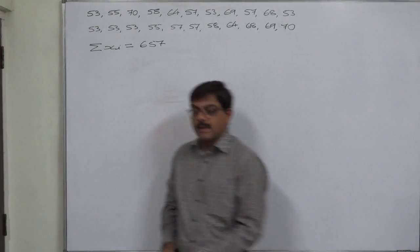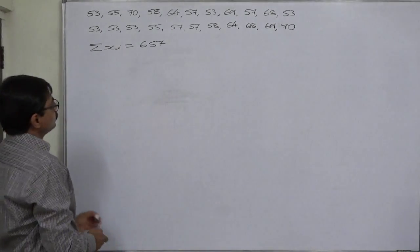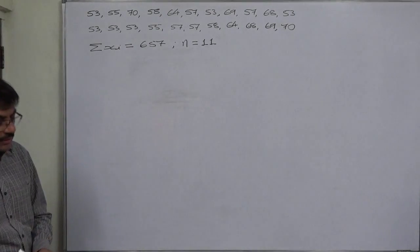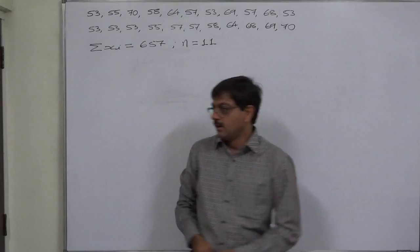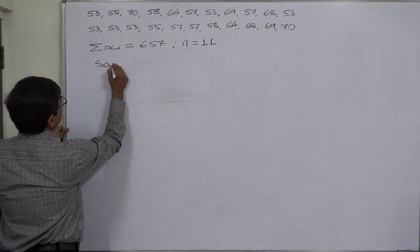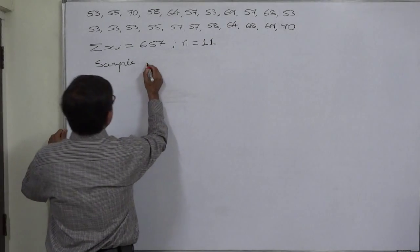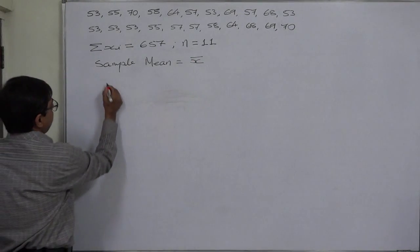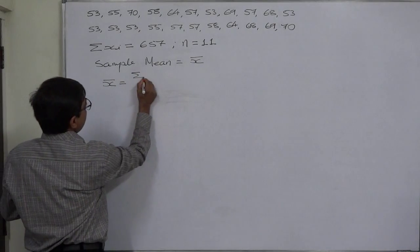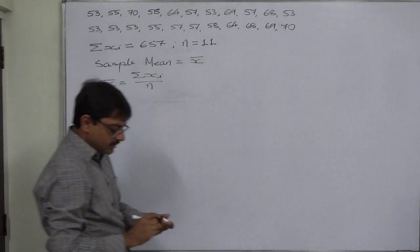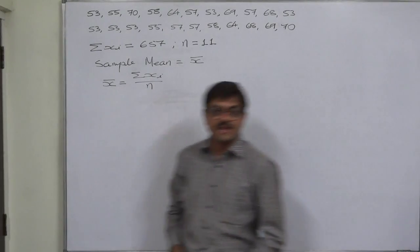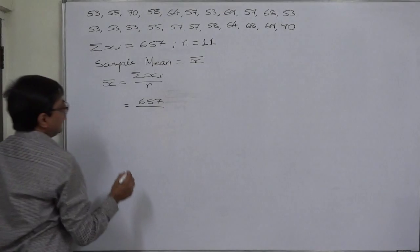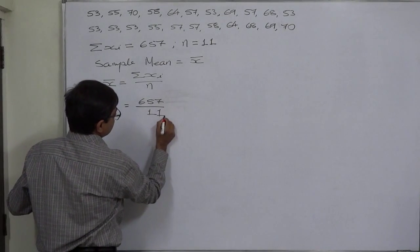This data is a sample drawn from a population. So we have to use small n to indicate the number of data values. In this case, n is 11. We are going to calculate the sample mean because this data represents a sample. The formula for the sample mean, x-bar, is sigma x divided by small n, where small n represents the sample size. Here, sigma x is 657 and n is 11.